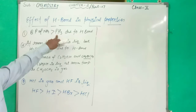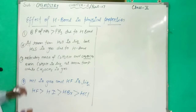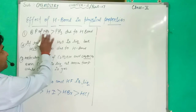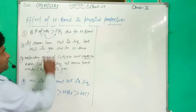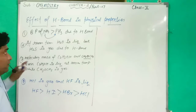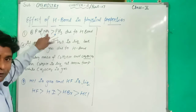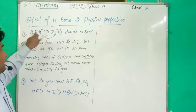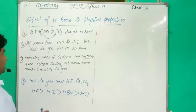Nitrogen and Phosphorus both belong to the same family, but in this case, NH3's nitrogen contains more electronegativity than phosphorus. That is why NH3 forms the Hydrogen Bond, and that is why the boiling point of ammonia is greater than PH3.